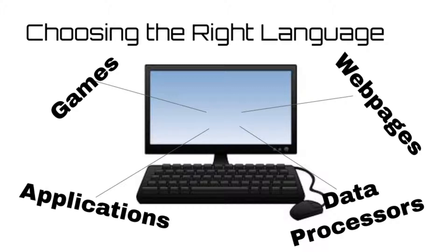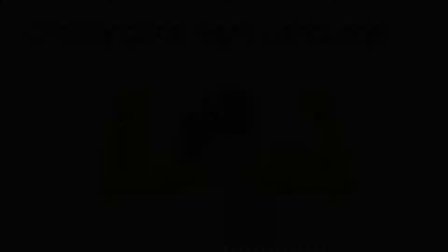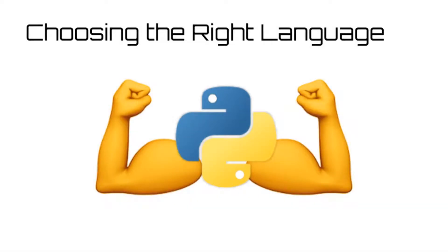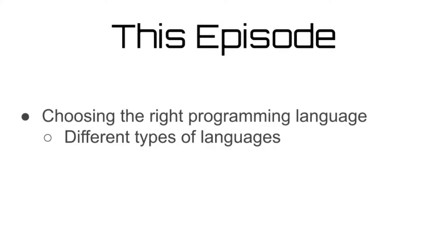But that doesn't mean every programming language is perfect for every application. Each language has its own strengths and weaknesses, and choosing the right one is very important for making it easier, or sometimes even just possible, for you to program what you want. So that's what we're going to talk about today — choosing the best language for what you want to do.